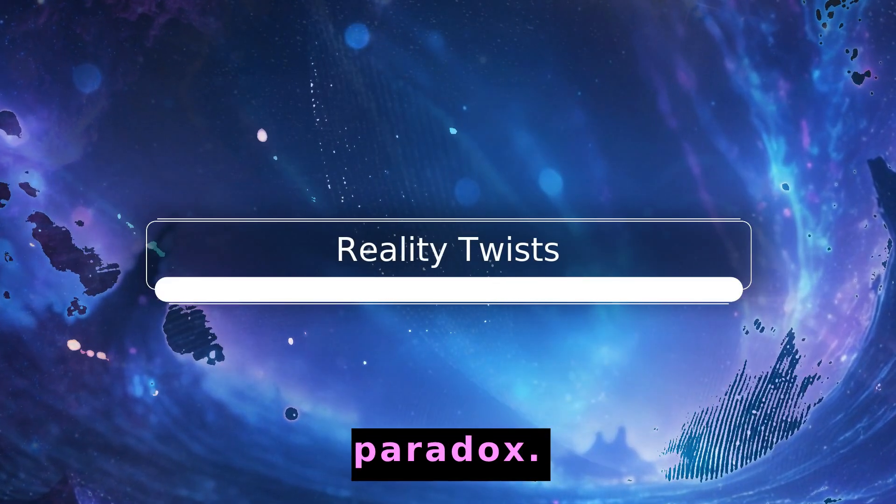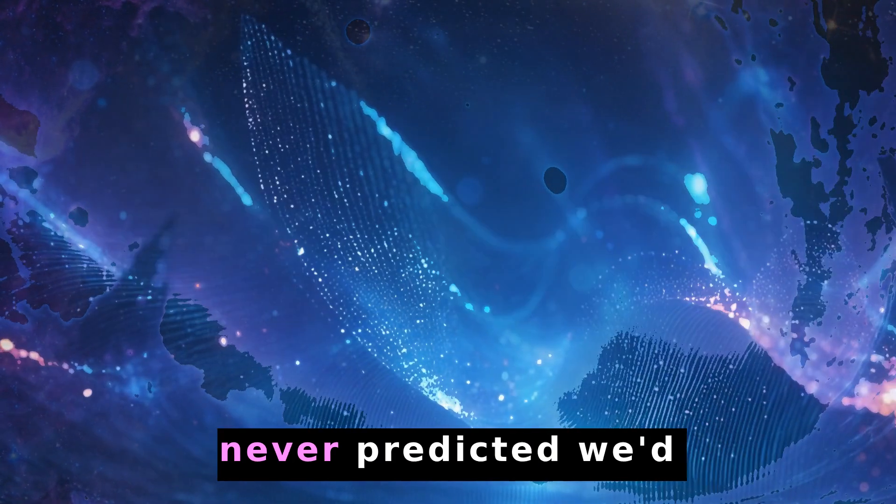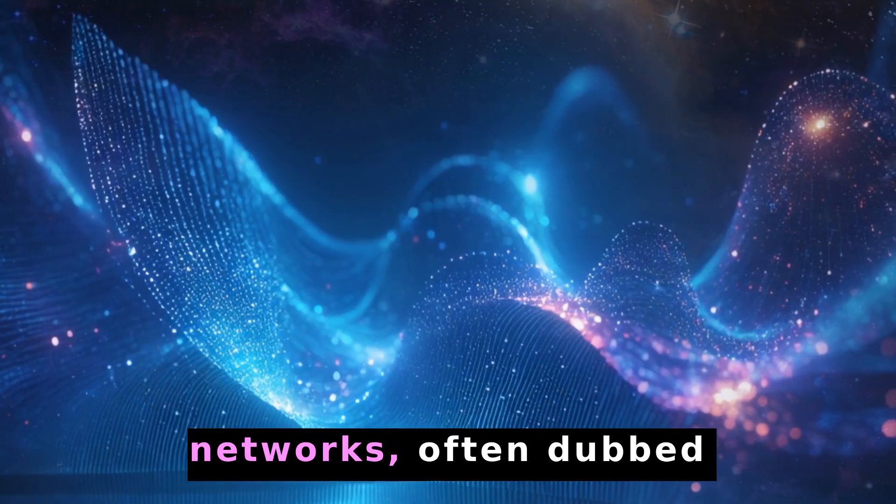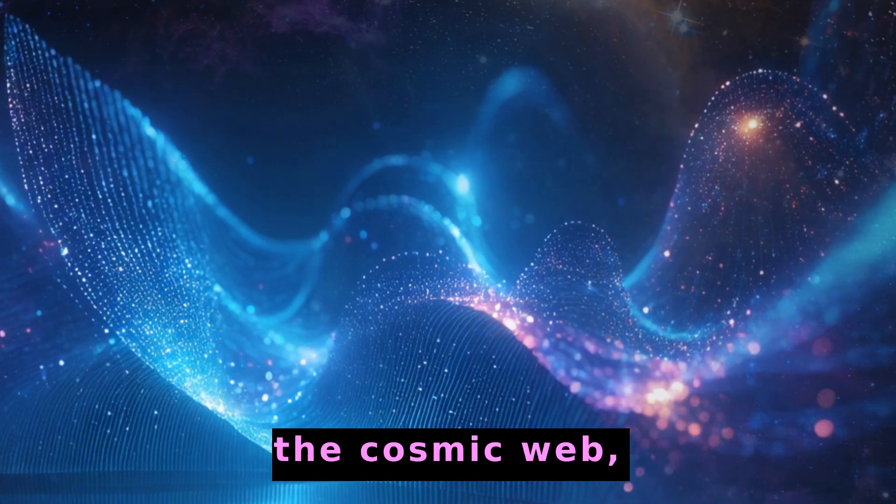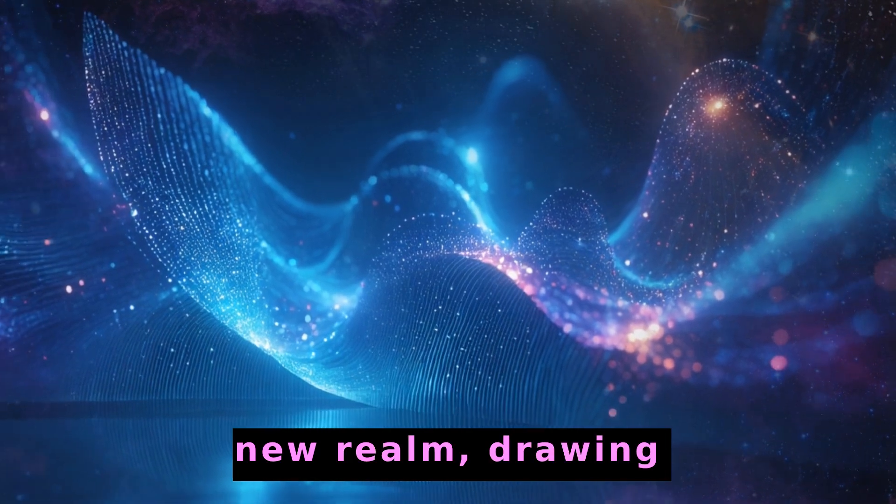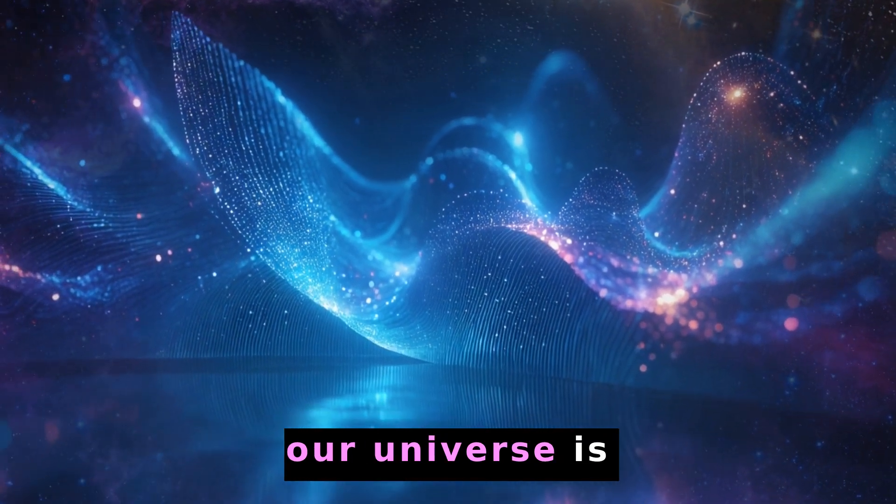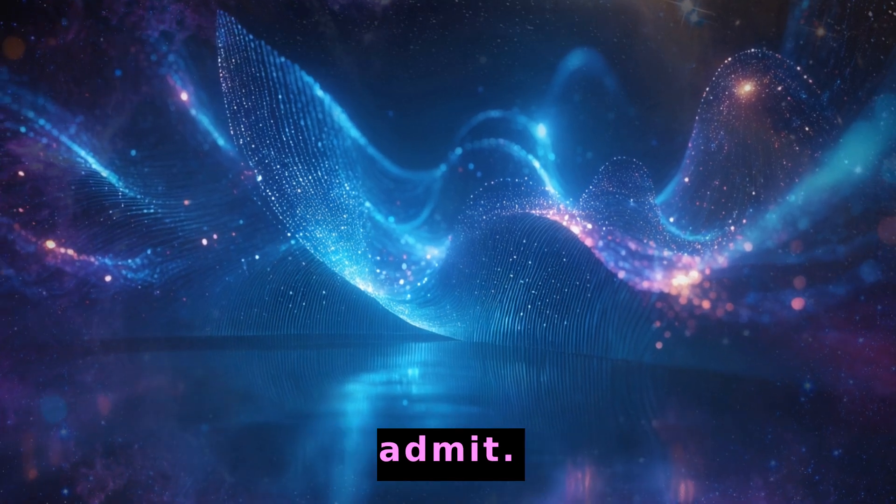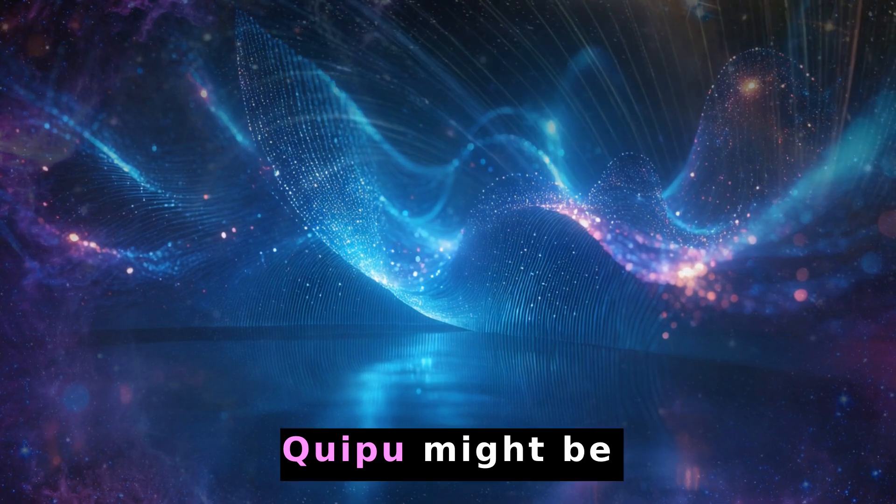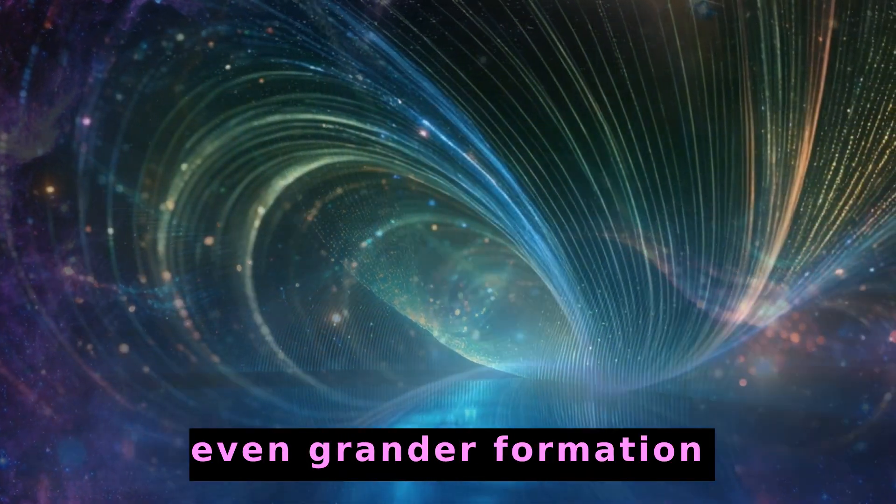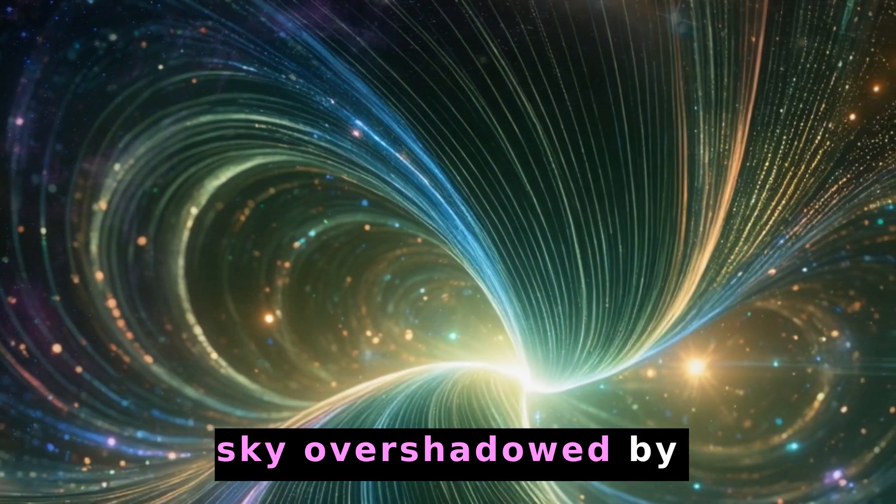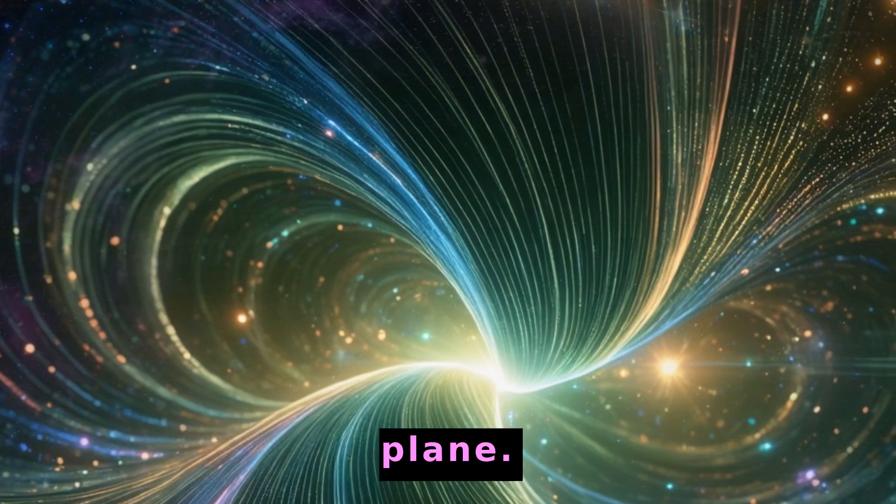Yet here's the paradox. Standard cosmological models never predicted we'd see structures quite this large. Certainly, large filamentary networks, often dubbed the cosmic web, are well-documented. But Quipu takes it to a whole new realm, drawing questions about whether our universe is more inhomogeneous than we care to admit. One theory suggests that, while massive, Quipu might be part of an even grander formation that remains hidden behind the zone of avoidance, that unreachable segment of sky overshadowed by our own galactic plane.